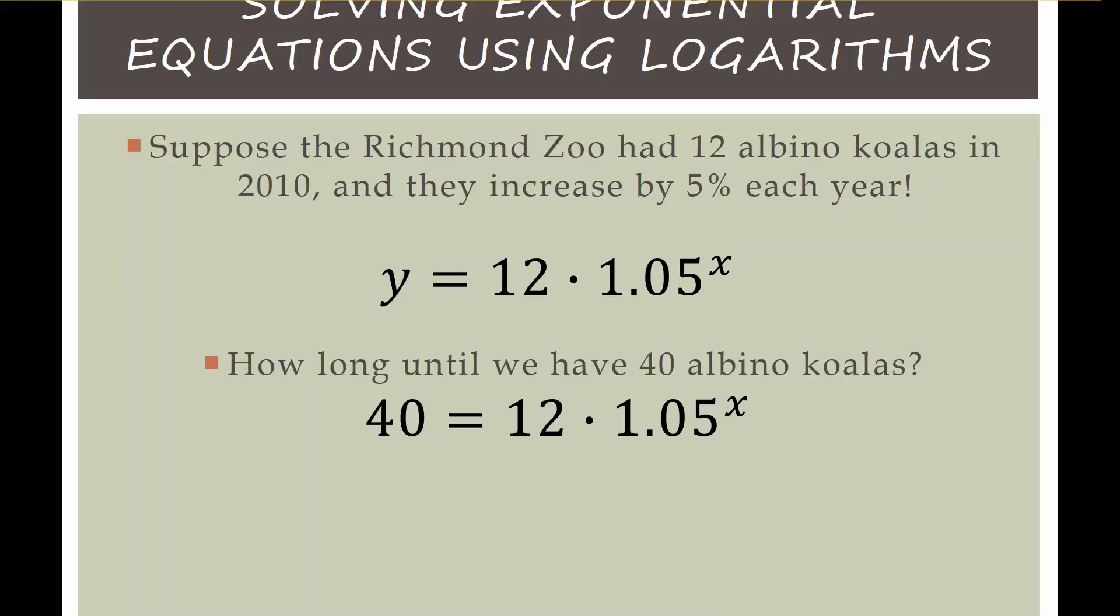So here is our situation. We initially started with 12 albino koalas. They were increasing by 5% each year which made our exponential function y equals 12 times 1.05 to the power of x where x was our number of years since 2010.